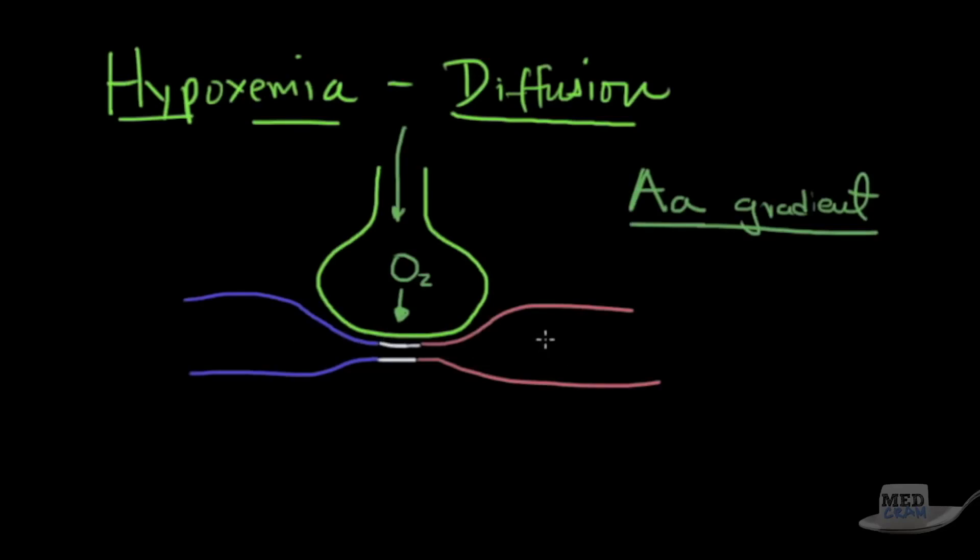The problem here is that sometimes you can have a blockage in this area, and that can cause a diffusion abnormality. Where you'd see this is particularly in patients with infiltrative diseases of the lung, like pulmonary fibrosis, especially if they exercise. If you've got a patient with fibrosis and they're at rest, there's stuff in the middle here in this interstitium preventing oxygen from diffusing.